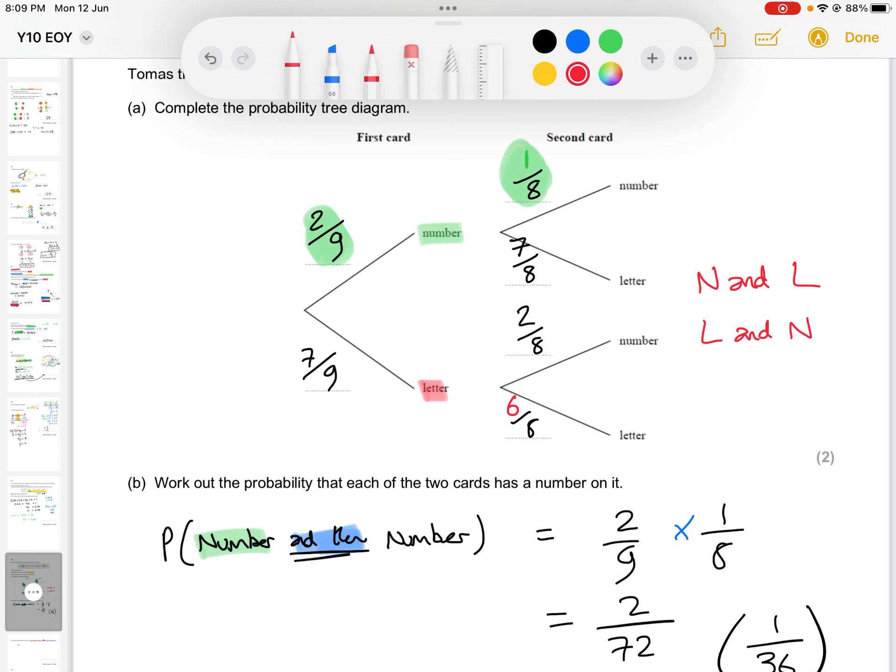Now technically what will happen here is that these probabilities are going to end up being the same. You could just do these manually separately and get your two answers and add them together, or you can find one of them and double it. It doesn't really matter as long as you're showing all your workings clearly. I'll show both methods here.